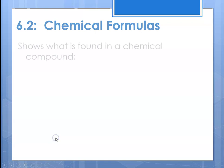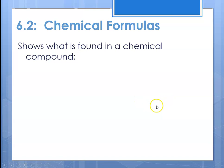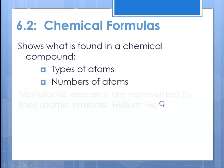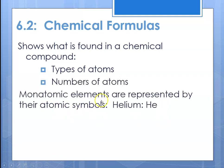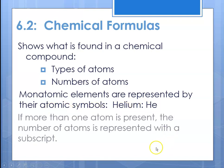When we talk about chemical formulas, we're talking about formulas that show what is found in a chemical compound. It tells us the types of atoms and the numbers of atoms. Monatomic elements are represented typically just using their atomic symbols, like helium is He. And if there's more than one atom present, the number of atoms is represented by a subscript.